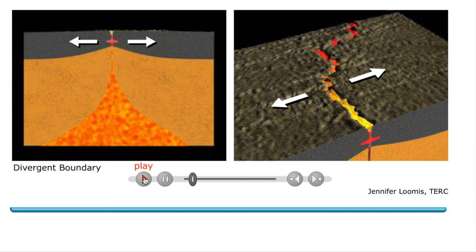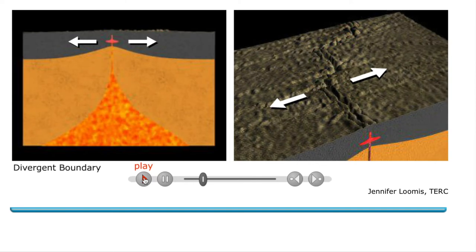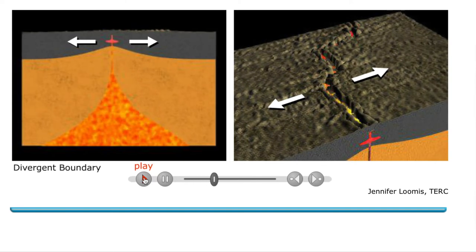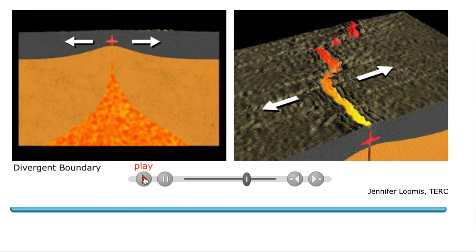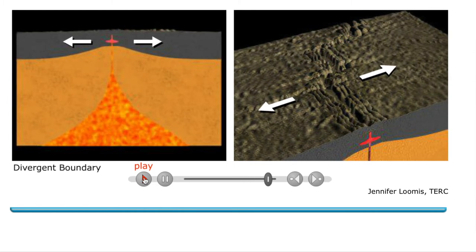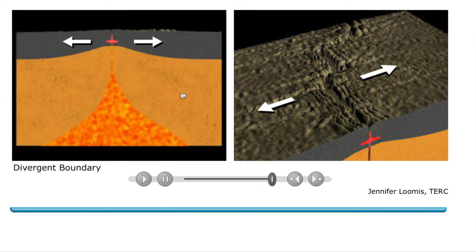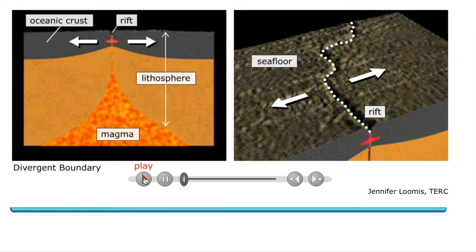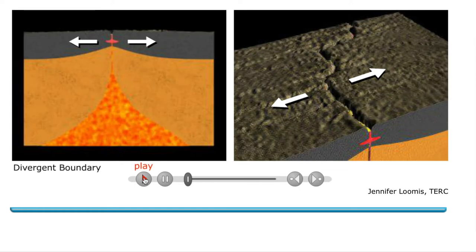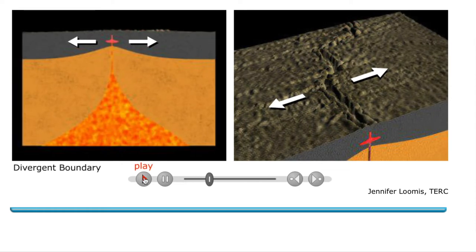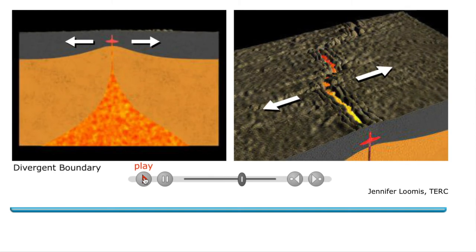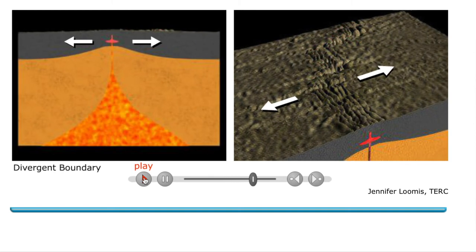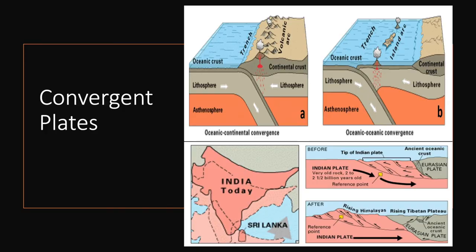There are different types of plate boundaries. Divergent plate boundaries are responsible for creating ridges and rift zones, which serve as the spreading center where new crust is created. Essentially, divergent plates are where two plates are moving away from each other, creating new crust.